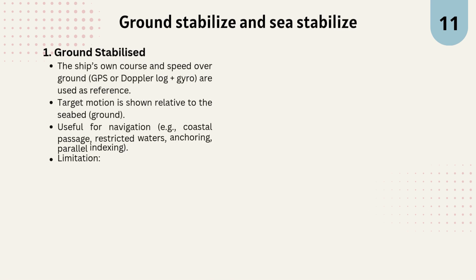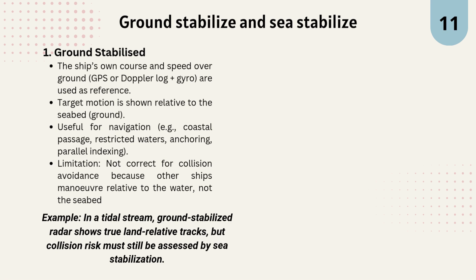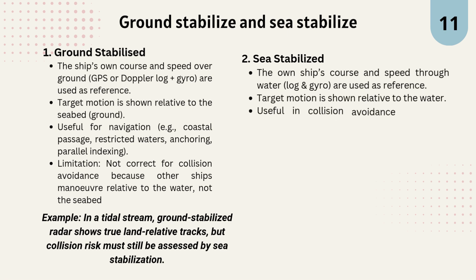Now let's look at ground versus sea stabilization. Ground stabilized mode uses GPS or Doppler log with gyro input. Targets move relative to the seabed, and it's useful for navigation in restricted waters, anchoring, and parallel indexing — but it is not suitable for collision avoidance. For example, in a tidal stream, ground stabilized radar shows true land-relative tracks, but collision risk must still be assessed by sea stabilization.